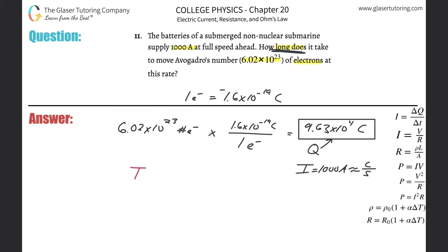If that intuition is a little shaky, just remember the formula: current equals the change in charge divided by the change in time. All we need to do is solve for time.